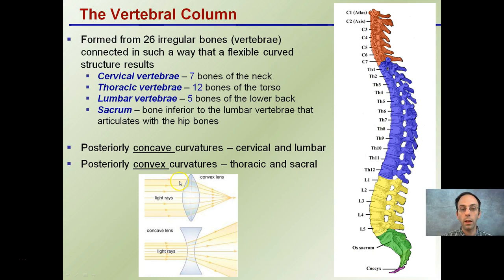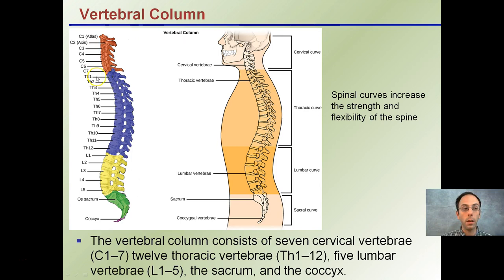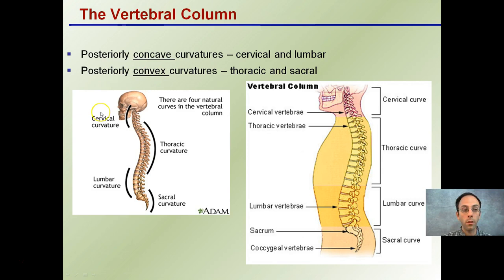This relates the same image to the human body, so you can get an idea of where these regions are located and their general size comparison. The reason these curves are important is that they help increase the strength and flexibility of the spine. Our thoracic vertebrae is located here, and here's our thoracic curve.